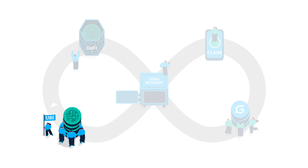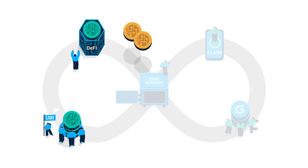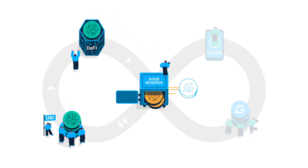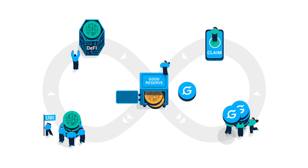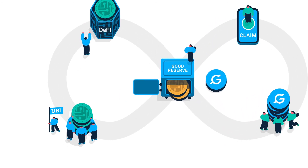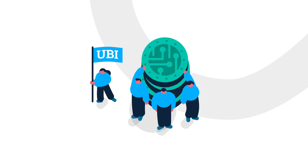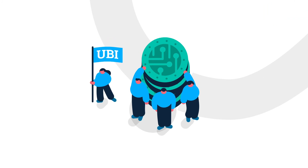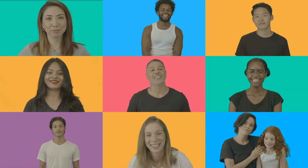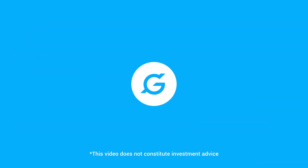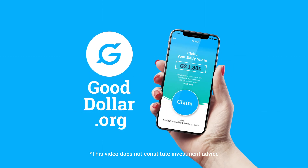In short, Supporters commit crypto that generates interest. GoodDollar coins are issued based on that interest and then distributed as UBI. UBI works with the help of financial supporters who care about doing well while doing good, and strive to promote a positive financial impact for others. The time for universal basic income has come. Join us.